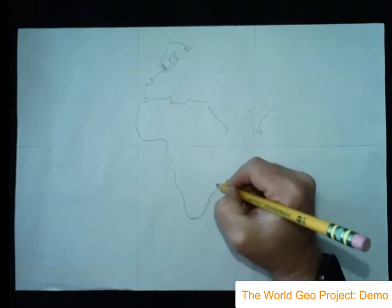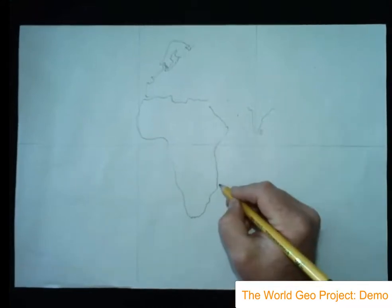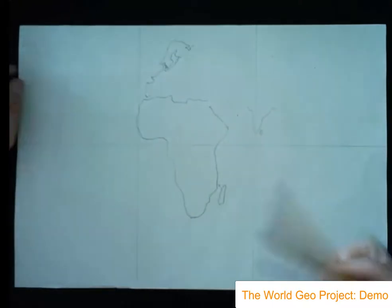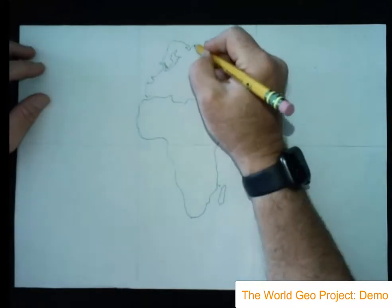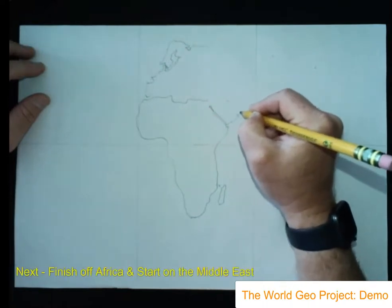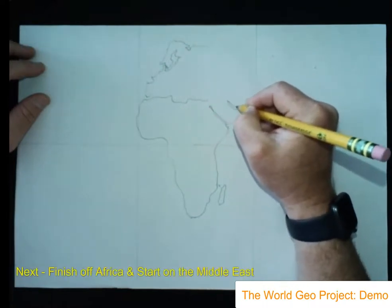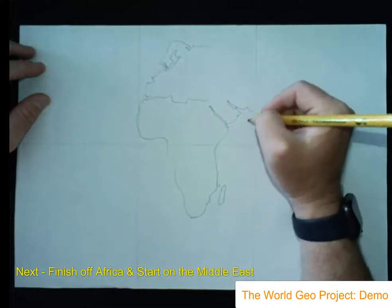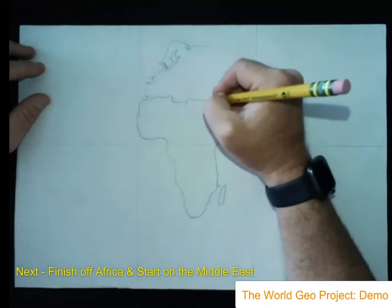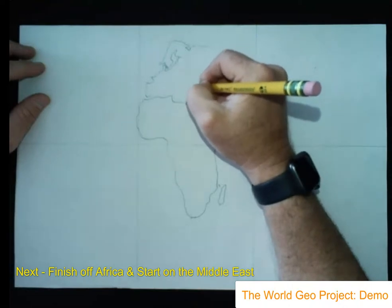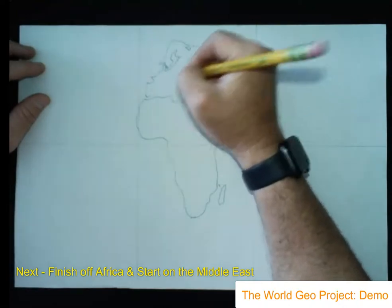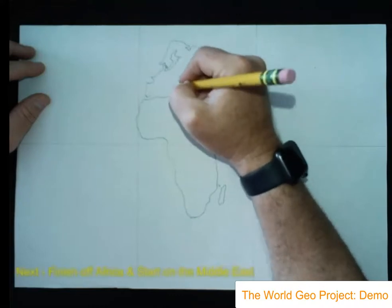As I'm drawing the outline for Africa here, it takes about 25 to 30 minutes to properly outline the Earth as accurately as I can within a certain time period. I'm trying to recreate what the students would be doing in a regular classroom, rather than spending hours getting completely accurate depictions. I'm just going as best I can in the time given.